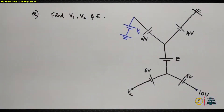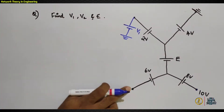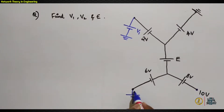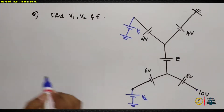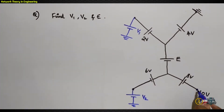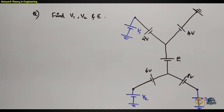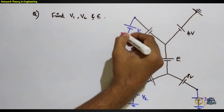Similarly, we replace v2 with a voltage source with its positive polarity at this point and negative polarity grounded. There is also a 10-volt node, which can be replaced with a voltage source with +10V at this point and the negative polarity grounded. Now we can directly apply KVL.